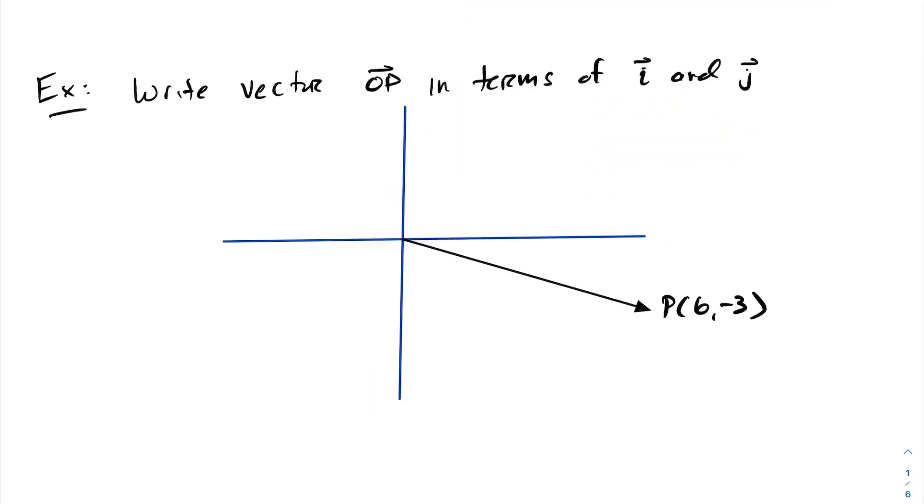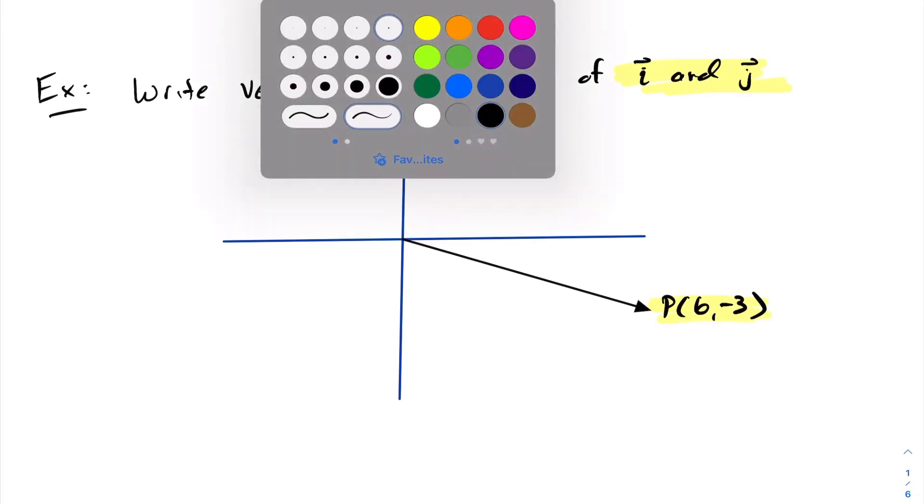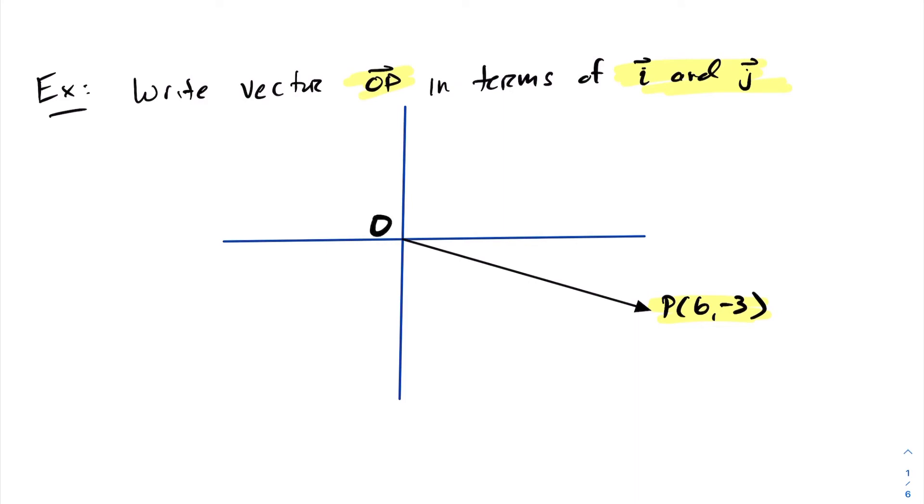Let's look at an example. We want to write vector OP in terms of our standard basis vectors i and j. In this situation, we have the vector that goes from the origin to point P located at (6,-3). Therefore, vector OP written in component form is (6,-3), but written in terms of its standard basis vectors i and j will be 6i minus 3j.